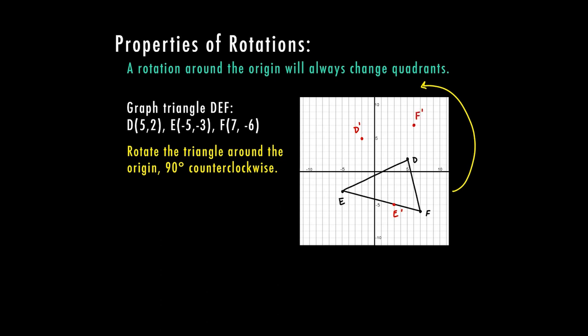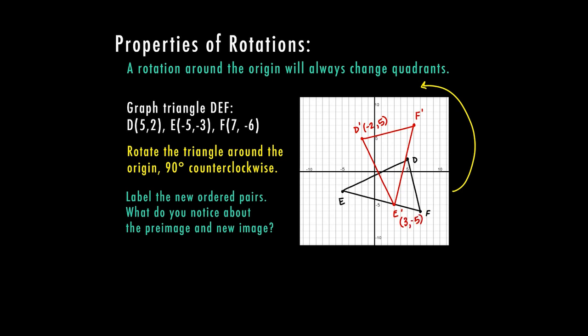So that should have moved everything into the next quadrant, turning to the left. So I'm going to go ahead and label the new ordered pairs. And then we're going to talk about what we see here that's changed. So my new point D for my new image is at negative two, five. My new E is at three, negative five. And my new F is at six, seven.